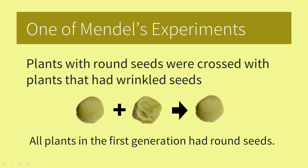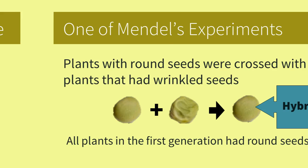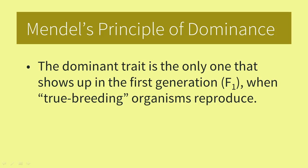He saw that all the plants of the first generation had round seeds. He called these plants hybrids because they were the offspring of two different varieties or characters. From this experiment and the others he performed over eight years, Mendel came up with the principle of dominance. The dominant trait is the only one that shows up in the first generation when different, true-breeding organisms reproduced. He reasoned that if the round seed form is the only one present in the F1 generation, it must be dominant over the wrinkled seed form.